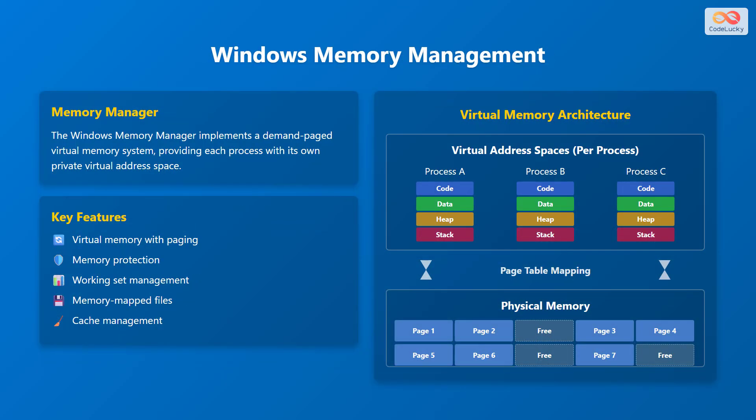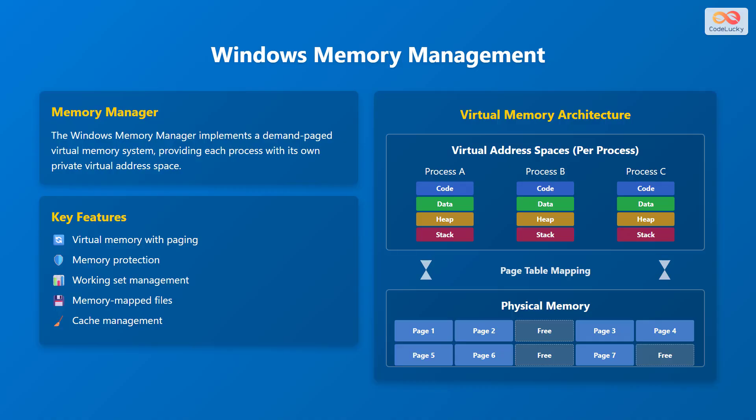Windows Memory Management is handled by the Memory Manager, which implements a demand-paged virtual memory system. This provides each process with its own private virtual address space. Key features of the Memory Manager include virtual memory with paging, memory protection, working set management, memory mapped files, and cache management. The diagram shows the virtual address spaces for each process, including code, data, heap, and stack. Page table mapping translates virtual addresses to physical addresses in physical memory, which contains used pages and free pages dynamically managed by the Memory Manager.